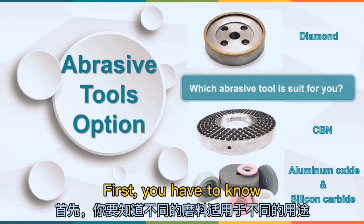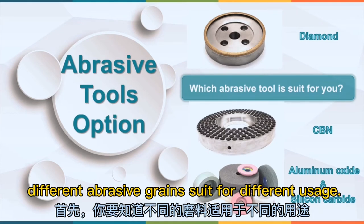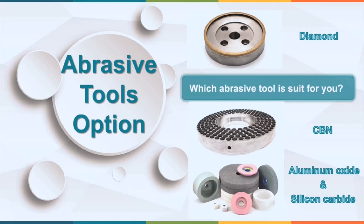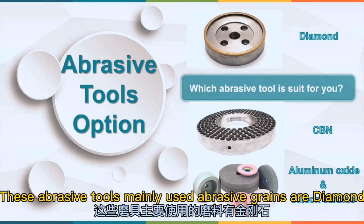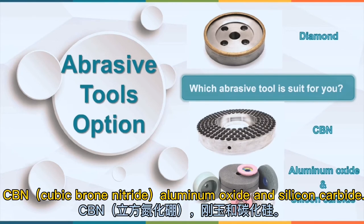First, you have to know that different abrasive grains are suitable for different usage. These abrasive tools mainly use abrasive grains that are diamond, CBN, aluminum oxide, and silicon carbide.